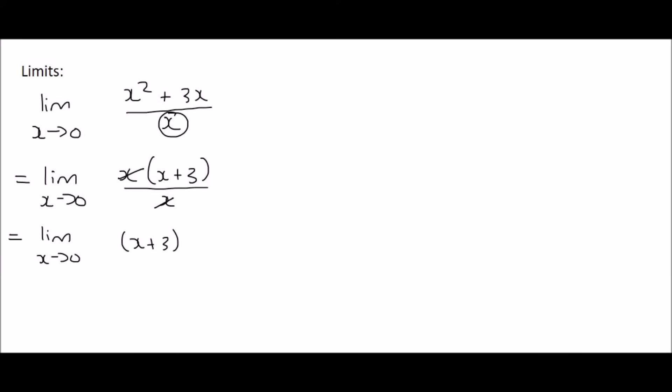Now we can just plug the value in, so that's going to give us (0 + 3), and 0 + 3 is just 3. So the answer for that one is 3. In summary: plug the value in. If it doesn't work, factorize or do something to simplify it—there'll only be one or two things you can possibly do. Then plug the value in. If you don't get an error on your calculator, then it's all fine.